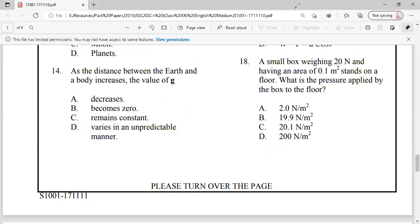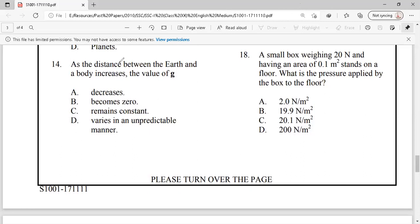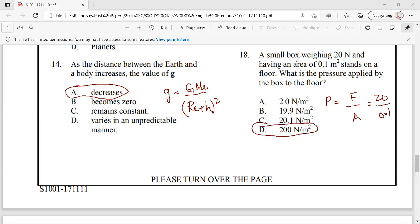In this page, 14 and 18 are the last two questions. As the distance between the earth and the body increases, the value of G decreases. The formula is G equals GmE mass of earth divided by radius of earth plus height square. So as distance increases from the center of the earth, the value of G will decrease. A small box weighing 20 Newton having an area of 0.1 meters on the floor. What is the pressure? We have force over area. Force is 20, area is 0.1 so 20 divided by 0.1 equals 200 pascals or 200 newtons per meter square. Option D.